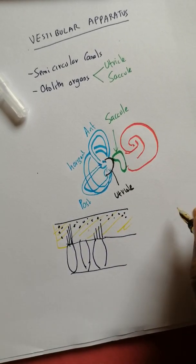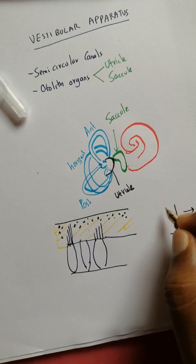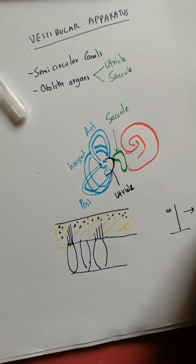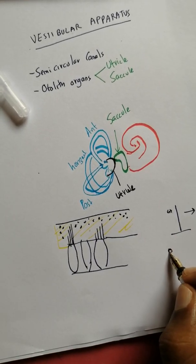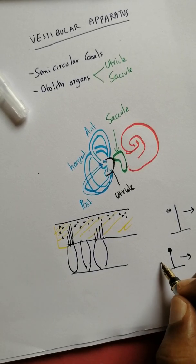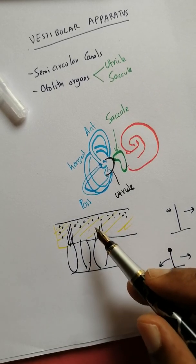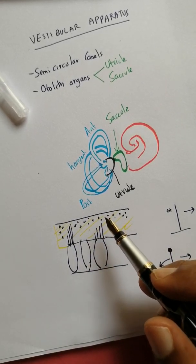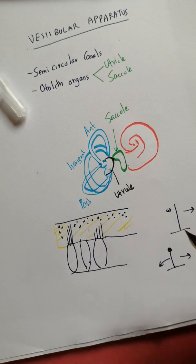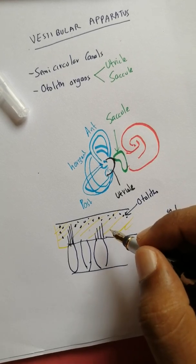This will actually help increase the effect of movement because the weight is at the top. For example, if you have a filament that you move, it will only bend so much. But if you add a weight to the filament and you move it, it will bend more. That same concept is happening here with the otoconia or ear dust or otoliths. These otoliths will help increase the bending of the hair cells.